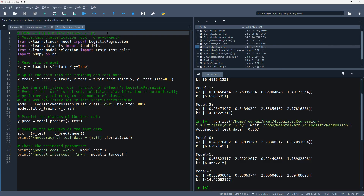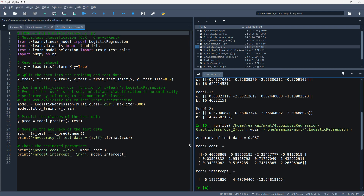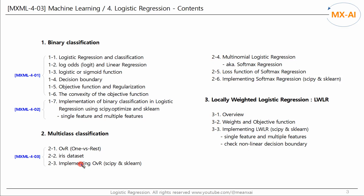Let's run this code. The results came out. So far, we have implemented OVR multi-class classification using scikit-learn's logistic regression library. In the next video, we will look at how to perform multi-class classification using multinomial logistic regression or softmax regression.